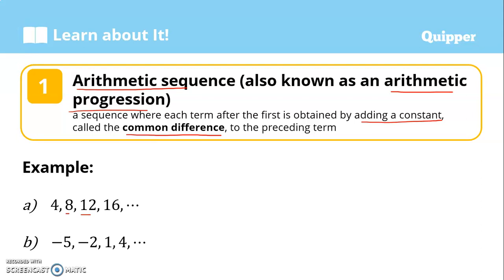Arithmetic sequence — when we say arithmetic sequence, this is also called arithmetic progression. An arithmetic sequence is a sequence where each term after the first is obtained by adding a constant. We add a number, and we call that constant the common difference.